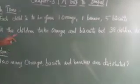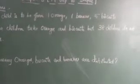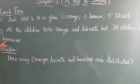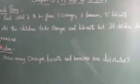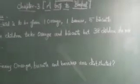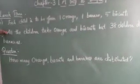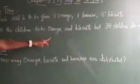All the children take oranges and biscuits but 38 children do not take bananas. So the question is: how many oranges, biscuits and bananas are distributed?